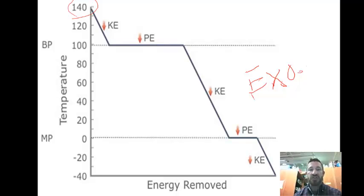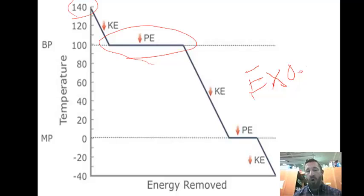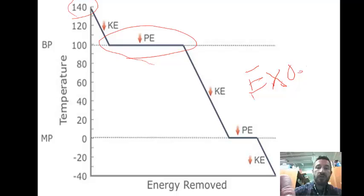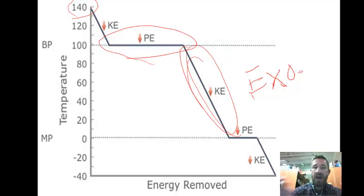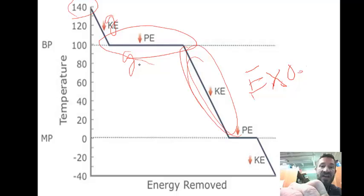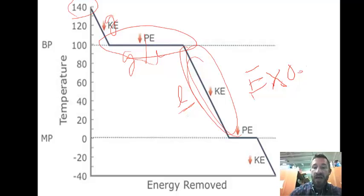First, the vapor is slowing down — we're decreasing kinetic energy. Then we have a gas going to a liquid — that's condensation. Then we have it going from vapor to liquid cooling down — all liquid, cooling down. You should also know what states exist at each section of the graph. At the first section: only a gas. At the middle flat section: a gas and a liquid. Then: liquid only. At the next flat portion: a liquid and a solid. And finally: simply a solid.